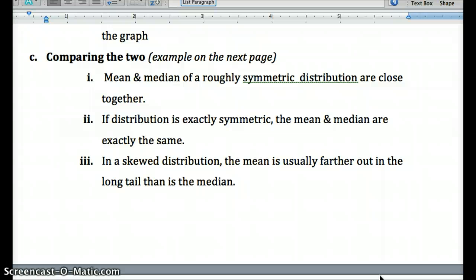If we have a skewed left distribution, the mean is being pulled to the left or smaller than the median. So the mean is usually further out in the long tail than the median is, generally.